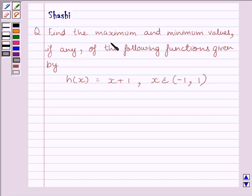Question says, find the maximum and minimum values, if any, of the following functions given by h(x) is equal to x plus 1, where x belongs to open interval minus 1, 1.